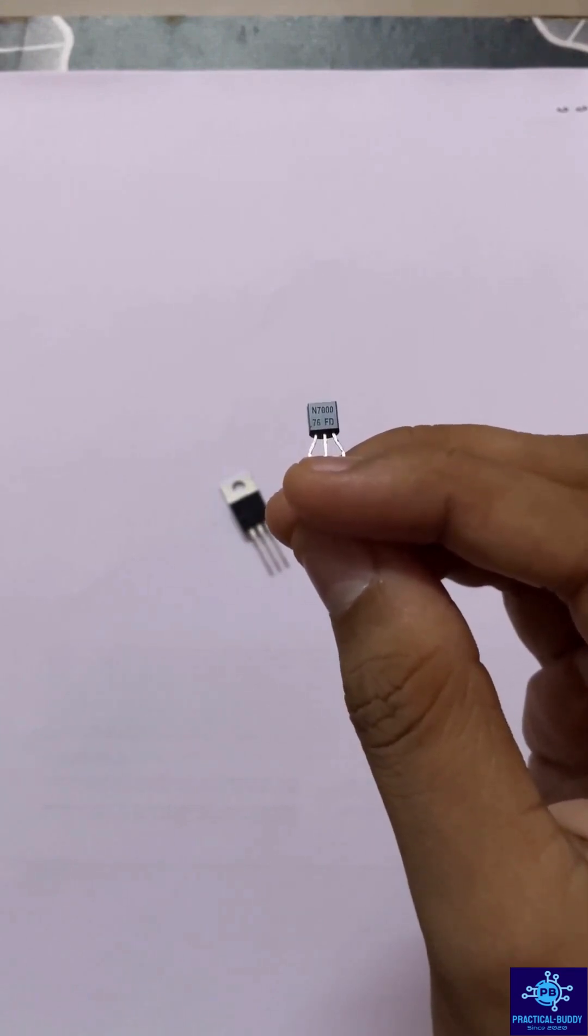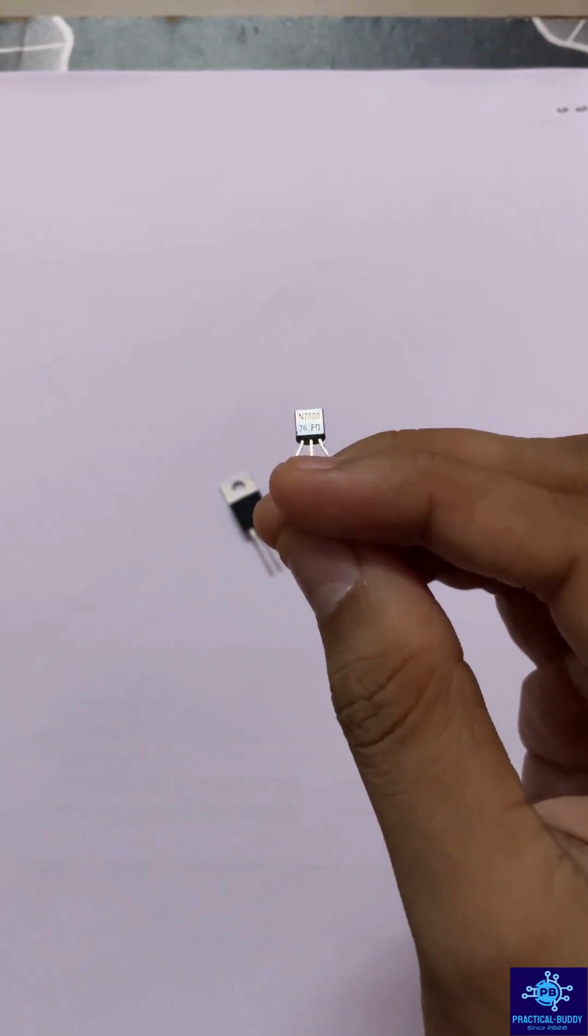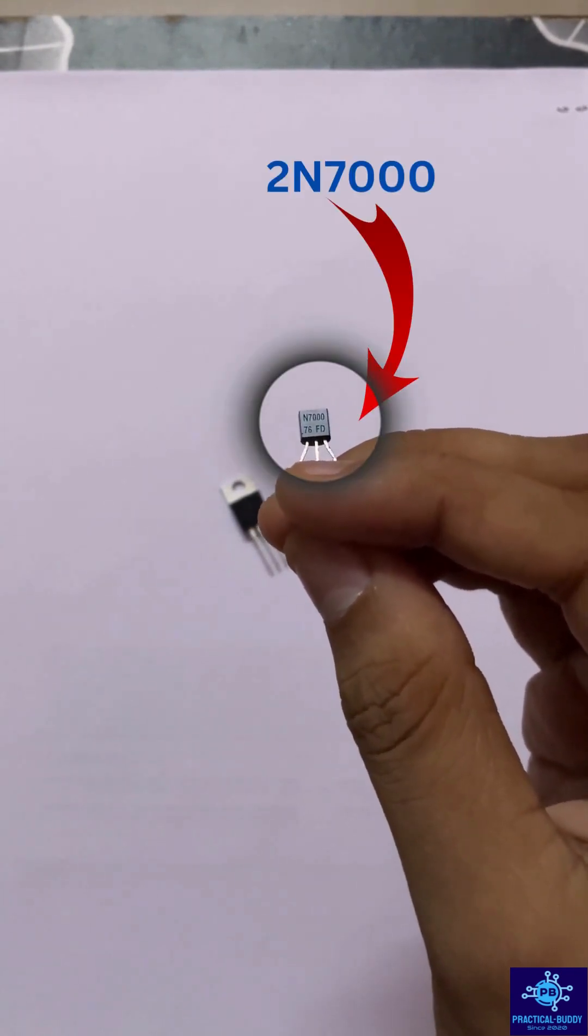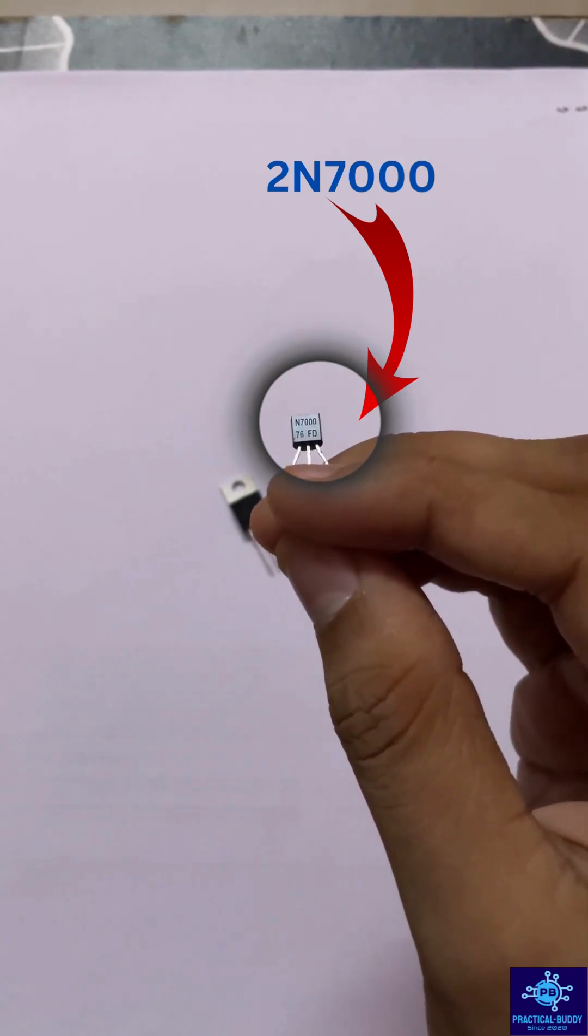Welcome to this short video where we are going to compare two different MOSFETs: 2N7000 and IRF540. As you can see, this is the MOSFET and its model number is 2N7000, although it looks somewhat like a BJT.